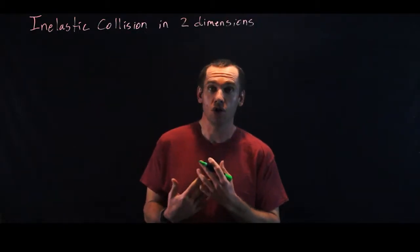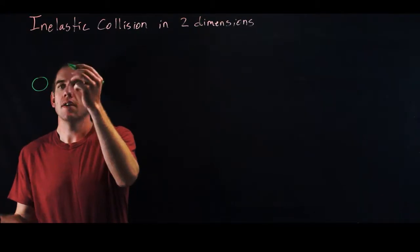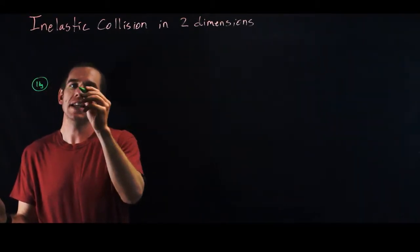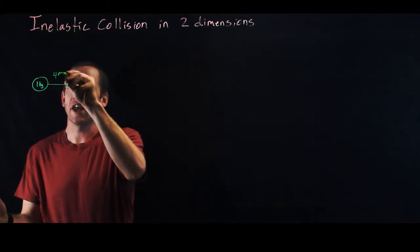Let's look at an inelastic collision in two dimensions. So we'll start with a ball that has mass, say, one kilogram, make the math easy, and it's moving this way with a velocity of say four meters per second.